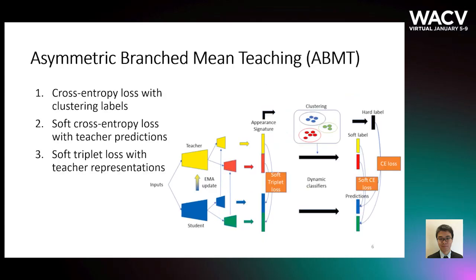We use both clustering-generated pseudo labels as well as representation and prediction of a teacher network as soft pseudo labels. We use clustering-generated labels in cross-entropy loss. Next, we use teacher prediction as a soft label in soft cross-entropy loss, and the teacher representation as a soft label in soft triplet loss.